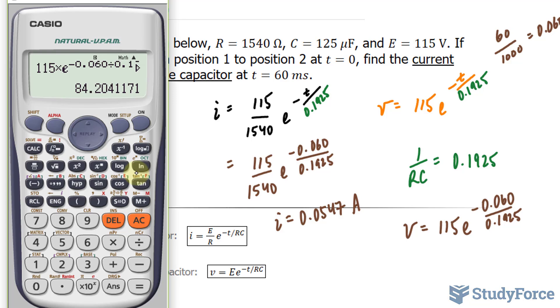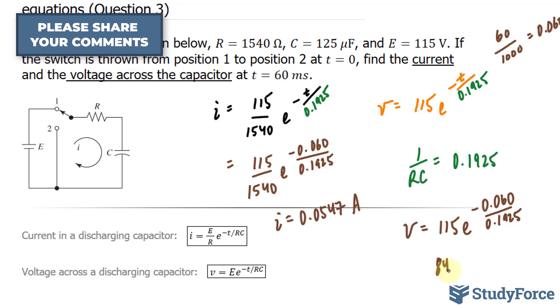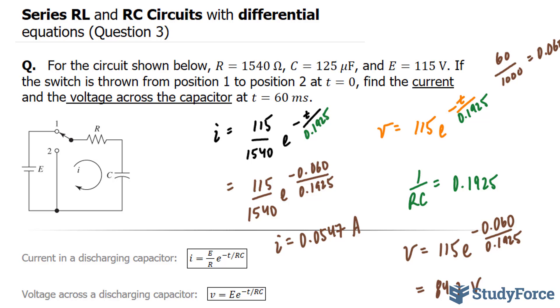And this gives us 84.2 volts. And there you have it. That is how to calculate current and voltage via an RC circuit with differential equations.